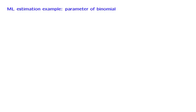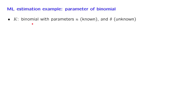Our first example will be very simple. We have a binomial random variable with parameters n and theta. Think of having a coin that you flip n times, and theta is the probability of heads at each one of the tosses. We flip it n times and observe a certain numerical value, little k, for the random variable k.